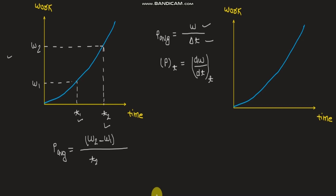Average power is w2 minus w1 divided by t2 minus t1. As per the graph, t2 minus t1 is this horizontal distance, and w2 minus w1 is this vertical distance. The two points of interest are joined by a line on the graph.